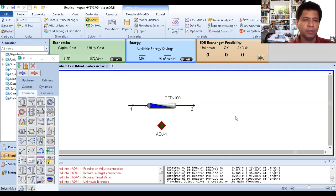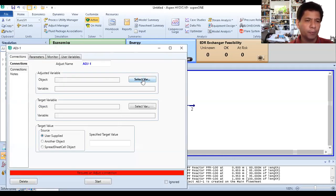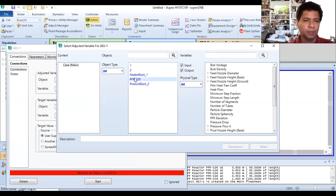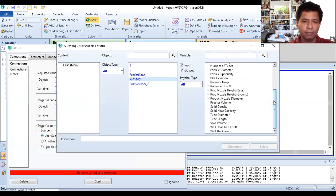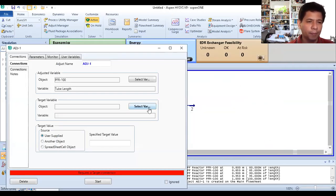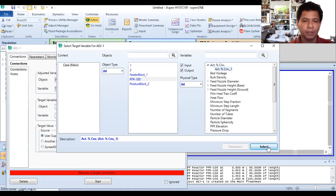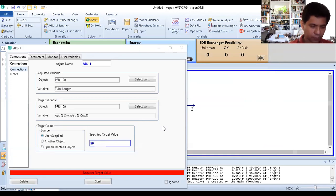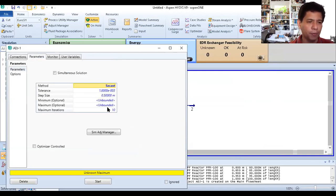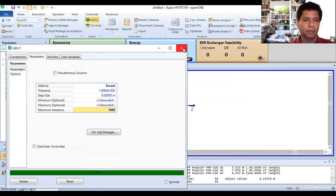This is PFR100. We'll adjust the length, the tube length - select. Then this is PFR100 again, then the actual percent conversion. Double-click this, then another click there, then select. Then enter 90. In parameters, so it doesn't keep iterating, set this to 1000. It will iterate 1000 times. Then just press start. It converged.